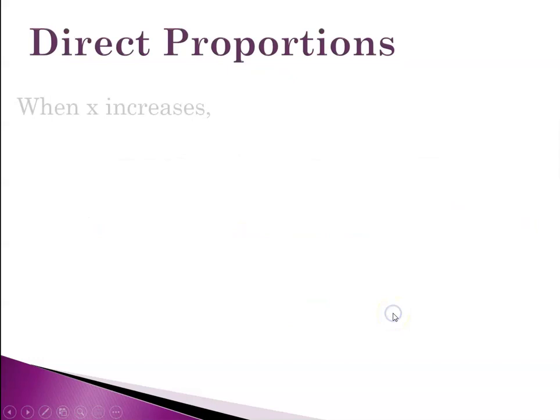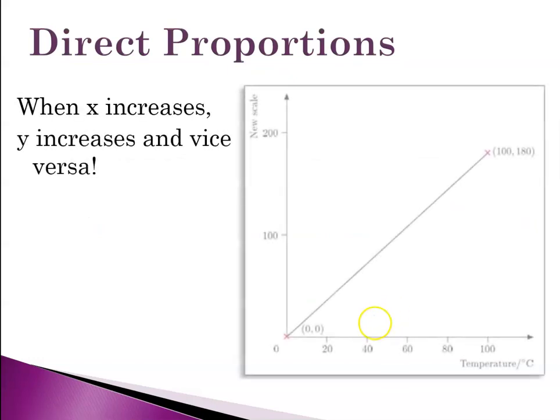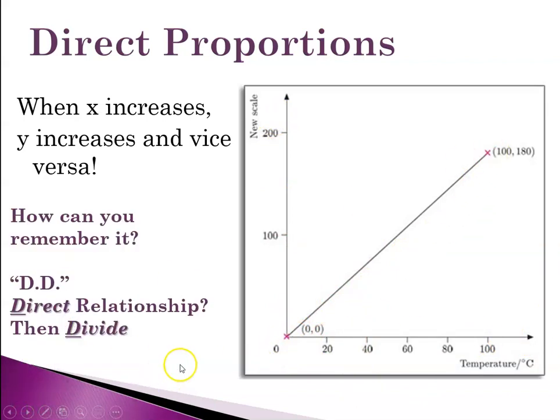So what does that look like graphically? When x increases y increases and vice versa. So you'll get a relationship that looks like this where when this goes up this goes up and you get this nice in this case linear relationship. How can you remember it? DD. Direct relationship then divide. DD.